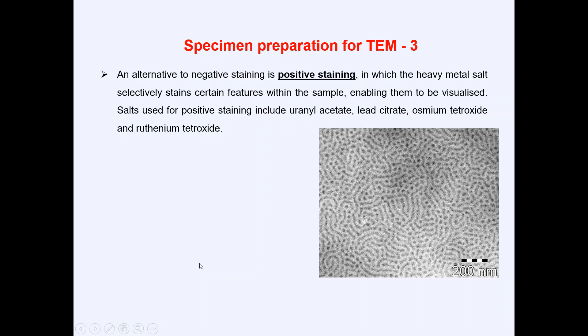As an alternative to negative staining, we also have positive staining. In positive staining, the heavy metal salt selectively stains certain features within the sample, enabling them to be visualized. Salts used for positive staining include uranyl acetate, lead acetate, osmium tetraoxide, and ruthenium tetraoxide.